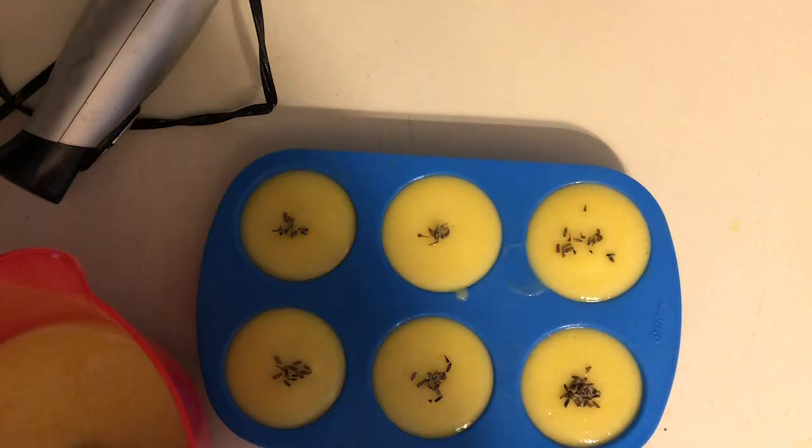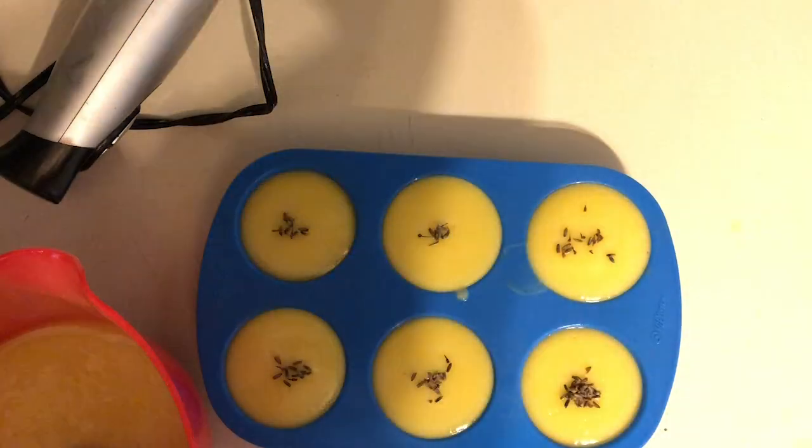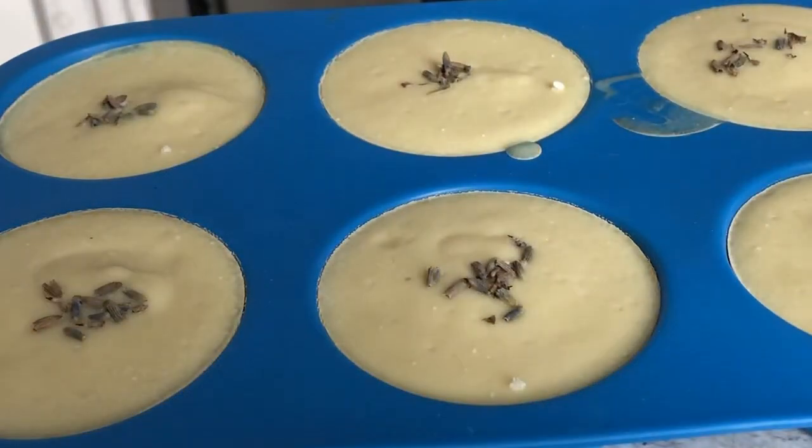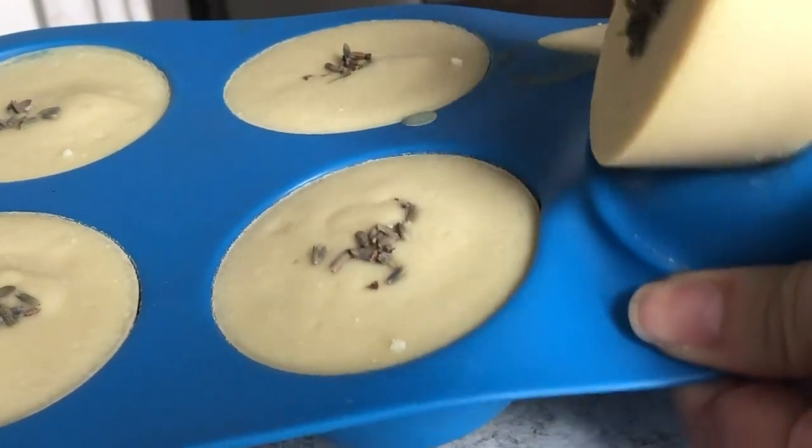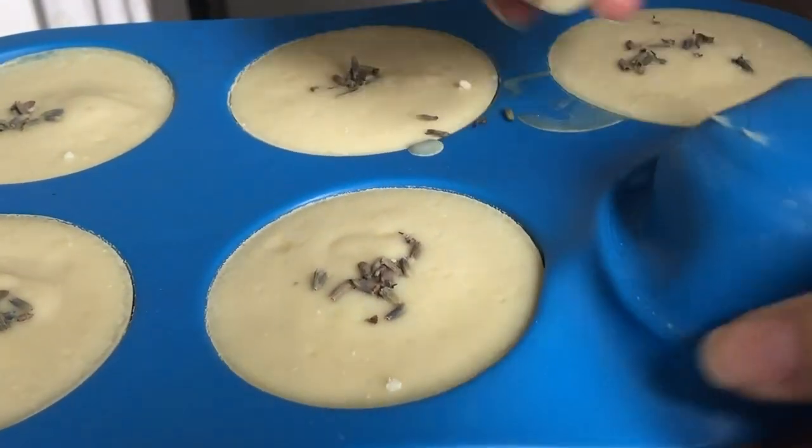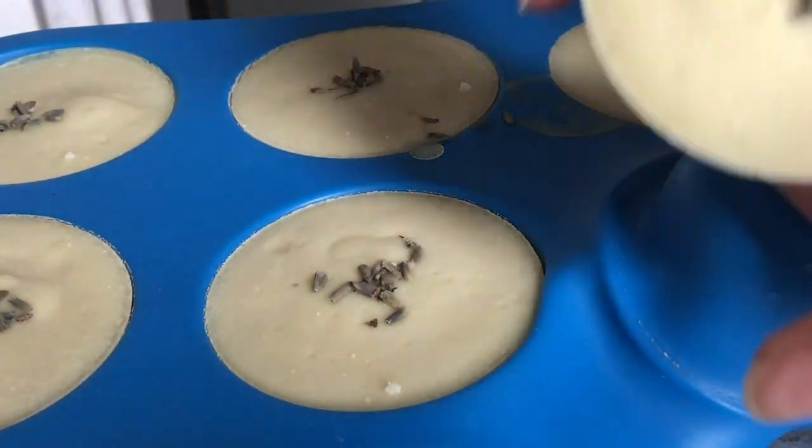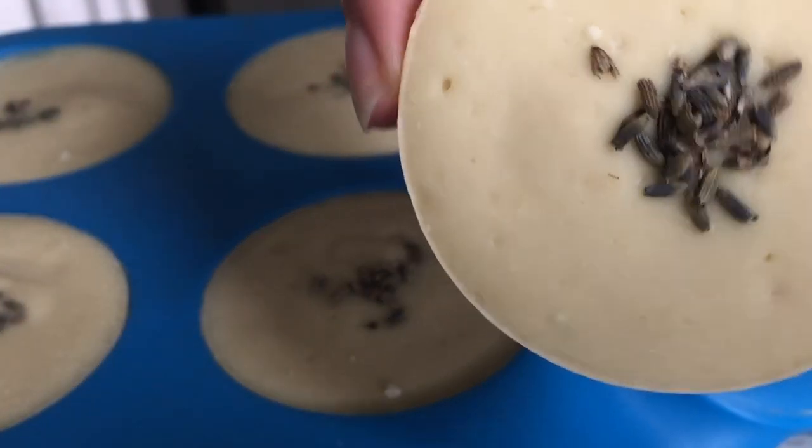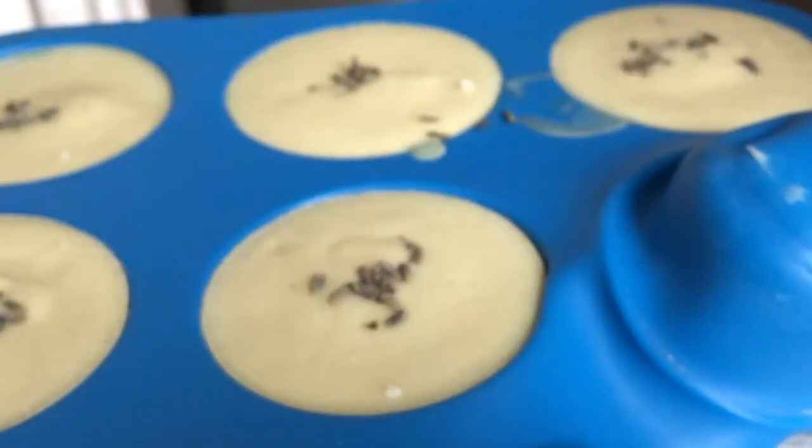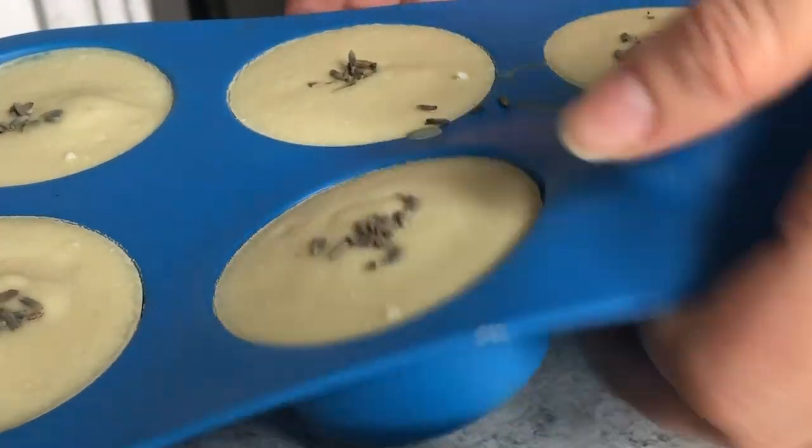You can also spray the top with rubbing alcohol if you want, so you don't get any soda ash. I added lavender buds to the top of my soap as well. It's coming out as you can see. It's sticking just a tiny bit, but it's not too bad. It's still very soft. We're going to wait about six to eight weeks before we try and use it.